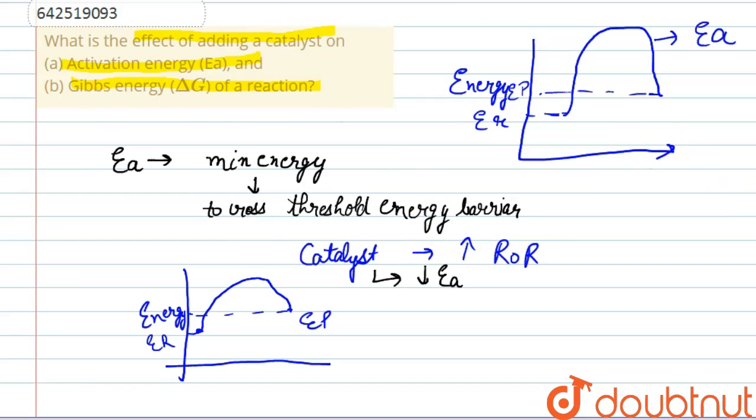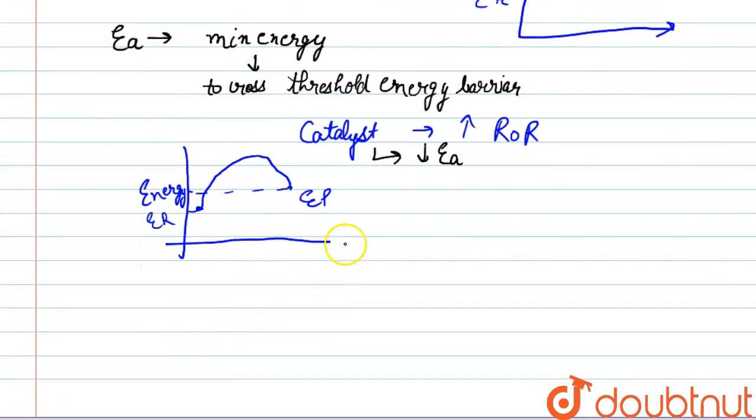Now, the second option is Gibbs free energy. Gibbs free energy that is delta G tells us about the spontaneity of the reaction, whether the reaction is spontaneous or non-spontaneous.